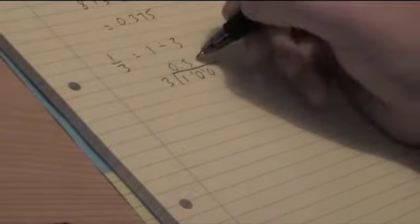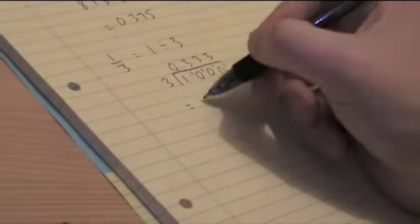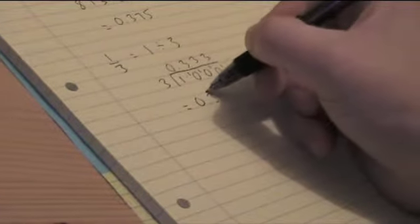Again, how many 3's go into 10? 3, remainder 1, and so on and so on. You can see we're going to carry on forever. So our answer is 0.3 recurring, and I'll put a dot over my 3 to show that that's a recurring number.